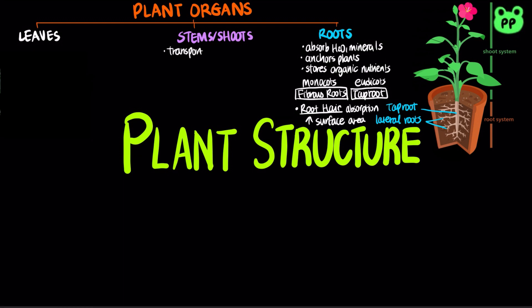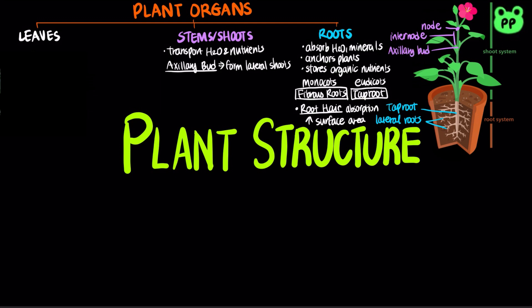Stems or shoots function in transporting water and nutrients. They consist of nodes and internodes. Nodes are the points at which leaves are attached, whereas internodes are the stem segments between nodes. An axillary bud is a structure that has the potential to form a lateral shoot, which can be either a vegetative shoot or a reproductive shoot consisting of a flower. An apical bud or terminal bud is located near the shoot tip and causes elongation of a young shoot.